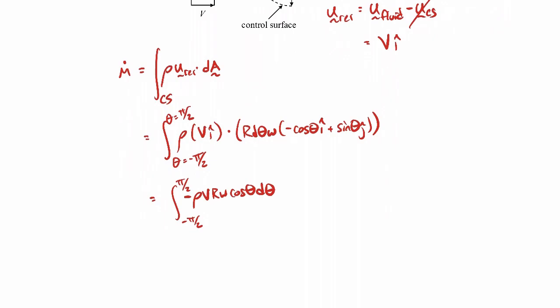All right. And then we can go ahead and perform our integral. So the rho, v, r, and w all come outside the integral. And we're left integrating cosine theta d theta. That will just be a sine theta from minus pi over 2 to pi over 2, which comes out to be 1 minus, or minus 1. So that's just equal to 2.